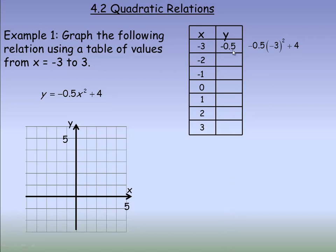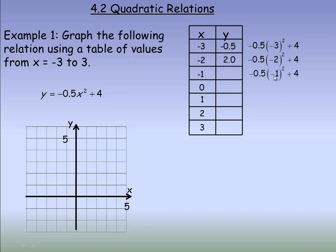So that's the point negative 3, negative 0.5. Next we substitute negative 2 in place of x: negative 0.5 times negative 2 squared plus 4. Remember your order of operations — we do the exponent first. Negative 2 squared is 4, times negative 0.5 is negative 2, plus 4 would be 2. Then we substitute negative 1 and evaluate — the y value is 3.5.